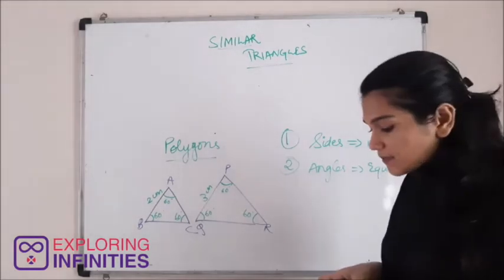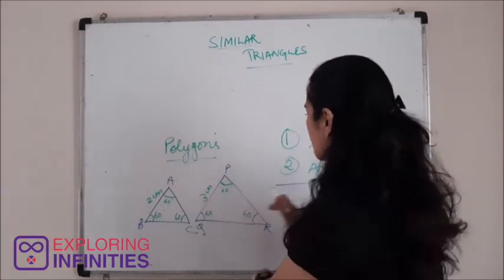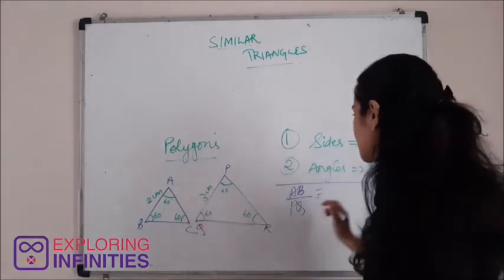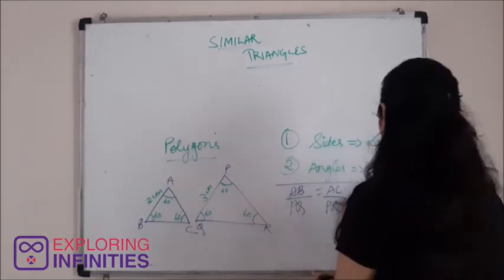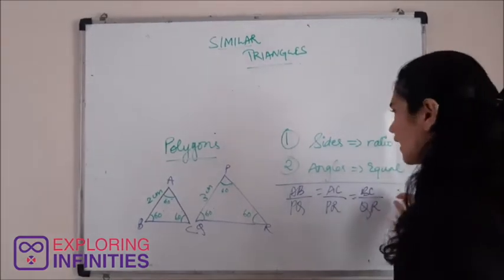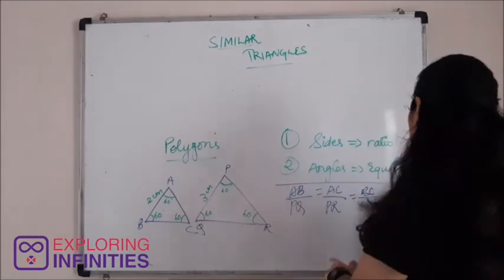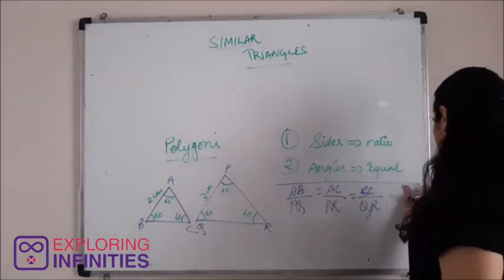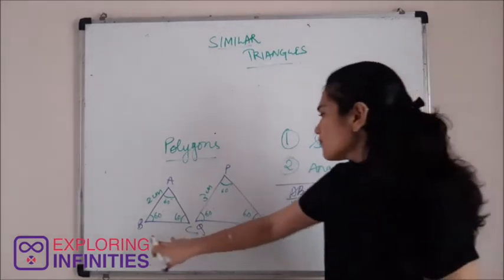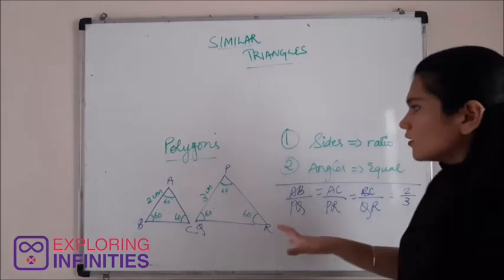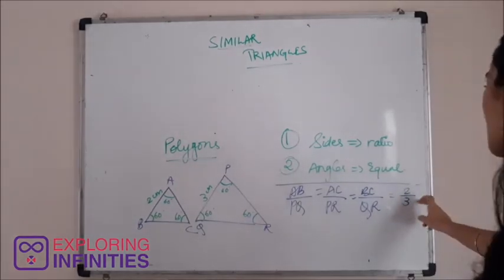In triangle ABC and triangle PQR, firstly if we talk about corresponding sides being proportional, it means that AB divided by PQ should be equal to AC divided by PR which should be equal to BC divided by QR. In our case, AB divided by PQ equals 2 by 3. Similarly, AC is 2 cm, PR is 3 cm, BC is 2 cm, and QR is 3 cm. So here the corresponding sides are proportional or they are in a particular ratio. The ratio is 2 by 3.